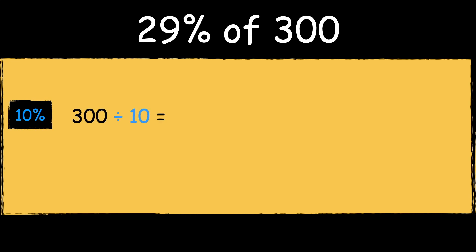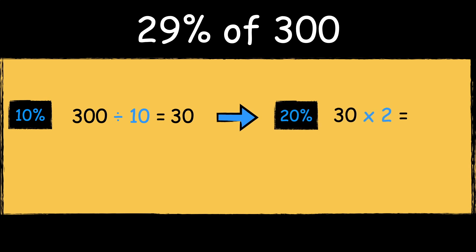Here's the next example: 29% of 300. First we work out 10% of the number by dividing it by 10. 300 divided by 10 is 30. We can then multiply the answer by 2 to find 20%. 30 times 2 equals 60.